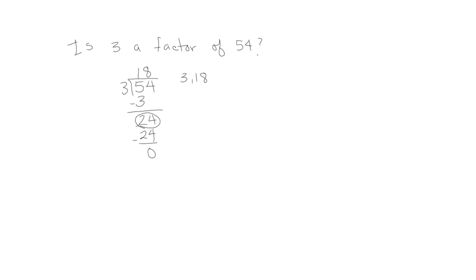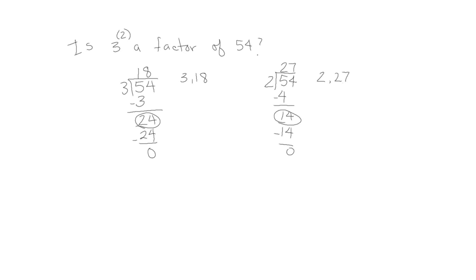Now let's see if 2 is a factor of 54. Again, we can say 54 divided by 2. I can put 2 tens in each group. 2 times 2 is 4, with 1 ten remaining, plus the 4 ones. I have 14 ones — I can put 7 in each group with no remainder. So both 2 and 27 are factors of 54.